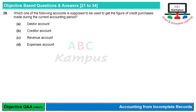Question 29: Which account is used to get the figure of credit purchases made during the current accounting period? Credit purchases की value हमें creditors का account — यानि payables account — बना के पता चलेगी। Option B is correct।